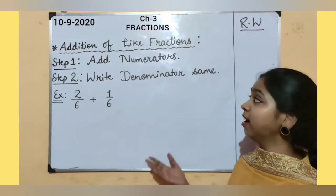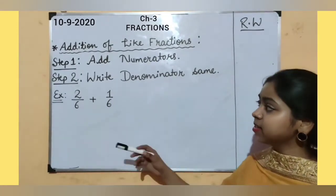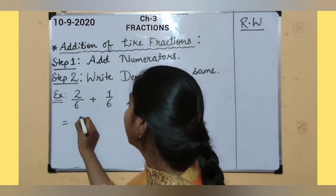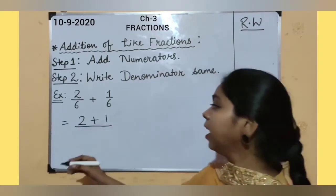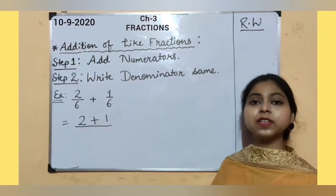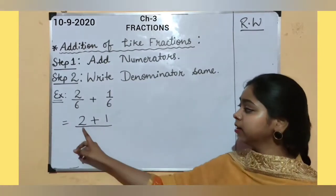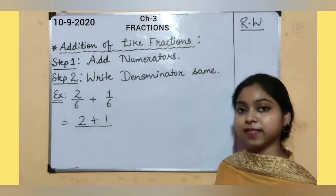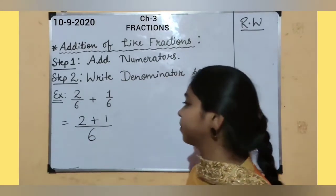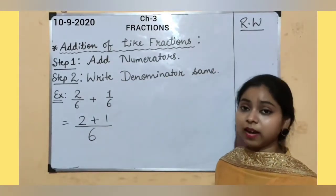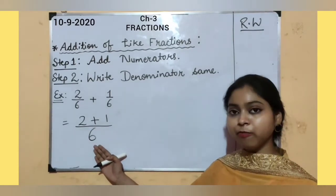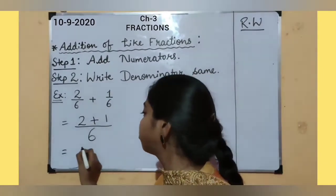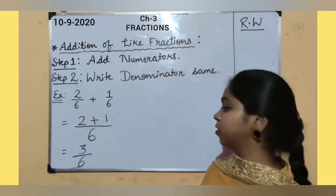Here are the steps to add our like fractions. Step 1: add numerators. Step 2: write denominator same. So here we will simply add our numerators: 2 plus 1. We have taken different parts from one single object that had a total of 6 parts, so we will write 6 instead of 6 plus 6 — that is a wrong way — because the total number of parts are 6. So we write it simply as 6. Now after adding: 2 plus 1 is 3, upon 6. So 3 upon 6.